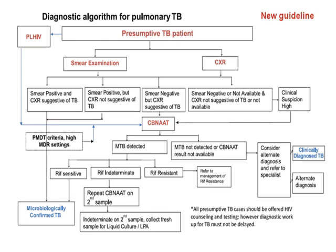One very important thing to learn is the diagnostic algorithm for laboratory diagnosis of pulmonary tuberculosis — which test should be used when. If you confront a presumptive TB patient, the first two things to be done are smear examination and chest X-ray. Remember, if this presumptive TB patient is a person living with HIV, you should directly go for CBNAAT, that is GeneXpert.